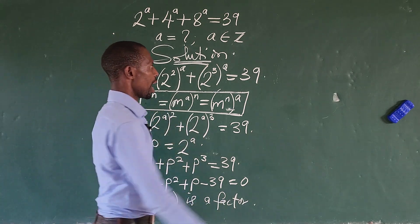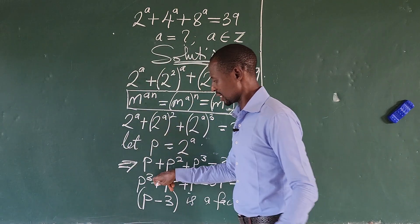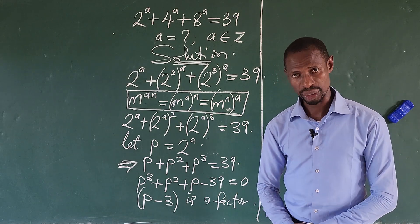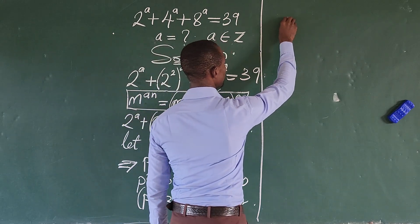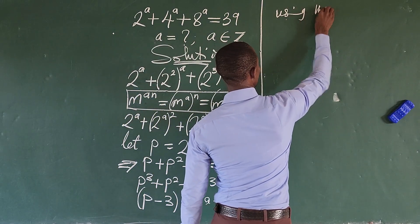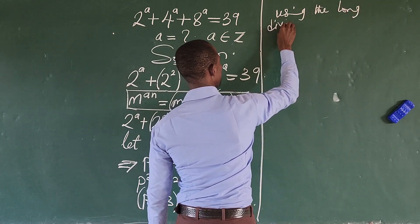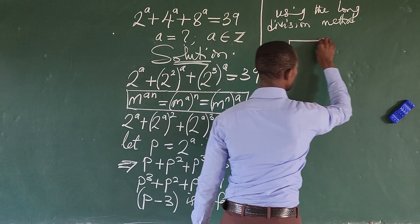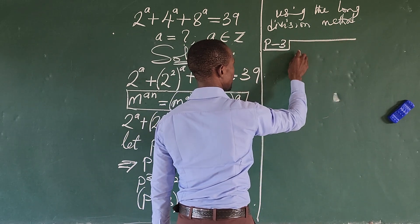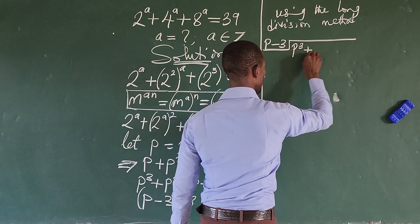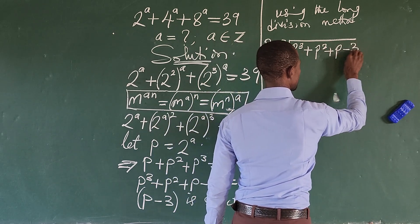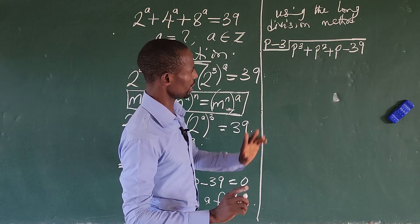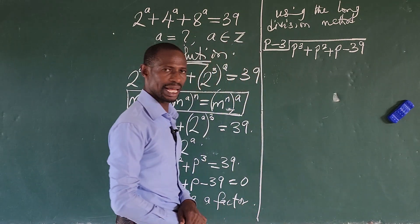So if we have p minus 3 as a factor, how do we get the other two factors? Because, like I said, this suggests that we look for three roots or three factors. Here we're going to use the long division method to get the other two factors. So, using the long division method, we have our divisor p minus 3 and our dividend p to the power of 3, plus p to the power of 2, plus p, minus 39. So we go gradually now. The first thing we do is use p to divide p to the power of 3, and that will give us p to the power of 2. We put our p to the power of 2 up top.